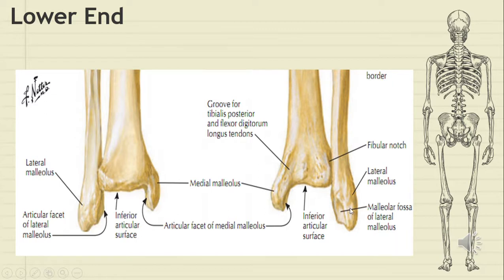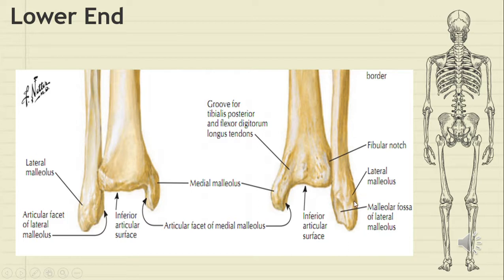The lower end of fibula is an elongated structure which is completely palpable and is wholly known as the lateral malleolus. It extends lower and more posteriorly compared to the medial malleolus — it is 0.5 to 1 cm lower than the medial malleolus and posteriorly extends 1 to 1.5 cm. On the medial surface anteriorly we have the articular facet for the ankle joint, posteriorly we have a fossa called the malleolar fossa, and the lateral surface is the subcutaneous part.